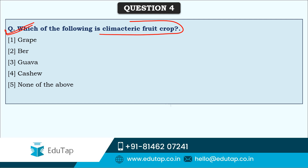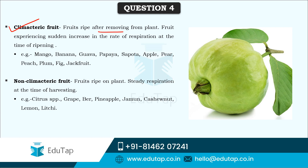Next question: which of the following is a climacteric crop? Climacteric fruit crops are those where, after harvesting from the tree, the fruit continues to ripen. They also experience a sudden increase in the rate of respiration at the time of ripening. Examples of climacteric fruits: mango, banana, guava, papaya, sapota, apple, pear, peach, plum, fig, and jackfruit.